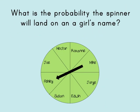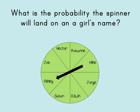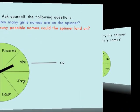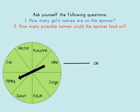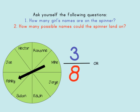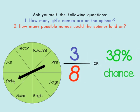Let's try one more. What is the probability that this spinner will land on a girl's name? First, how many girls' names are on the spinner? I see Ashley, Roxanne, and Susan, so I see 3 girls' names. How many possible names could the spinner land on? I see 8 names on the spinner. This means the probability of the spinner landing on a girl's name is 3 out of 8, or a 38% chance.